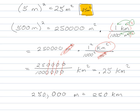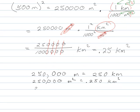You have to move it over a squared number of places. So instead of moving it over three, you'd move it over six, so 250,000 meters squared is the same thing as 0.25 kilometers squared. And then similarly...